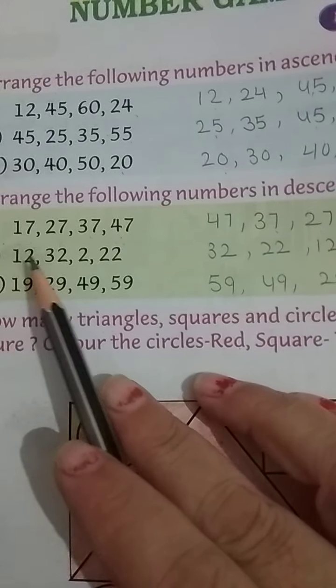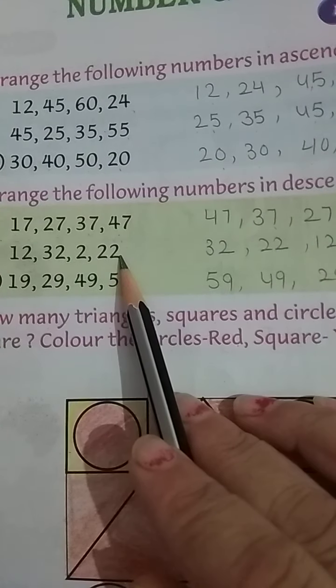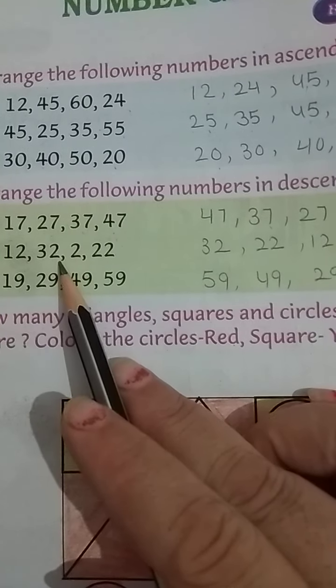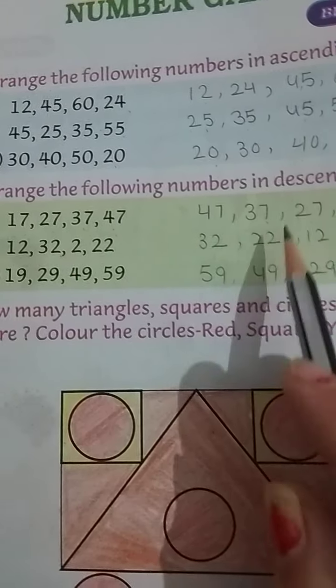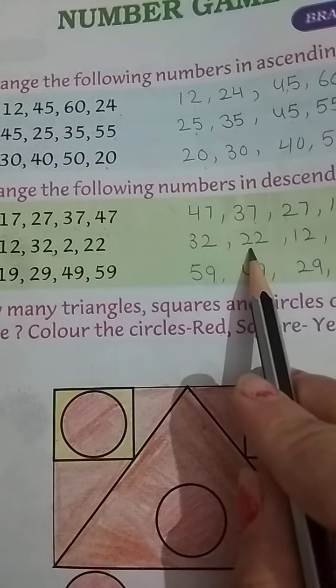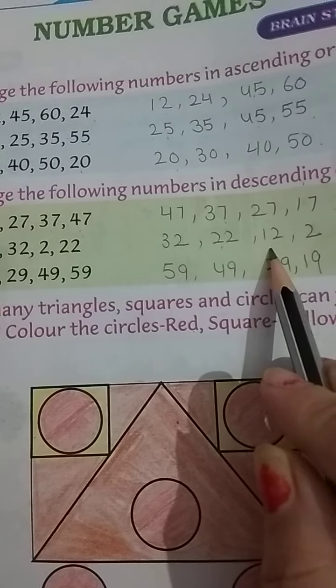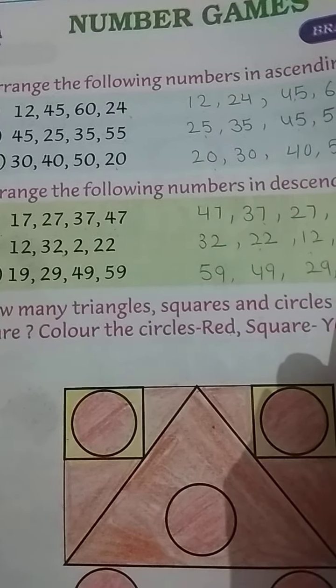Next. 12, 32, 2 and 22. Abh first kaunsa ho gaya biggest number? 32. Second, 22. Third, 12 and smallest number 2.